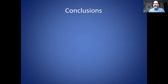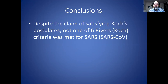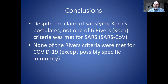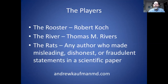To conclude: despite the claim of satisfying Koch's postulates, not one of the six Rivers criteria was met for SARS in 2003 — not one. None of the Rivers criteria were met for COVID-19, except possibly specific immunity, the least important of the six criteria. Rumors and lies placed COVID-19 as the cause of a pandemic with no proof — no proof whatsoever. Please connect with me at my website, andrewkaufmanmd.com. Thank you so much for your time.